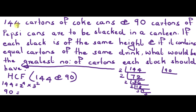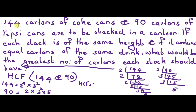For 90: dividing by 2 gives 45, then by 3 gives 15, then by 3 gives 5. So 90 = 2 × 3² × 5. HCF is the product of smallest powers of common prime factors: 2 appears once in common, and 3² appears in both. So HCF = 2 × 3² = 2 × 9 = 18 cartons.